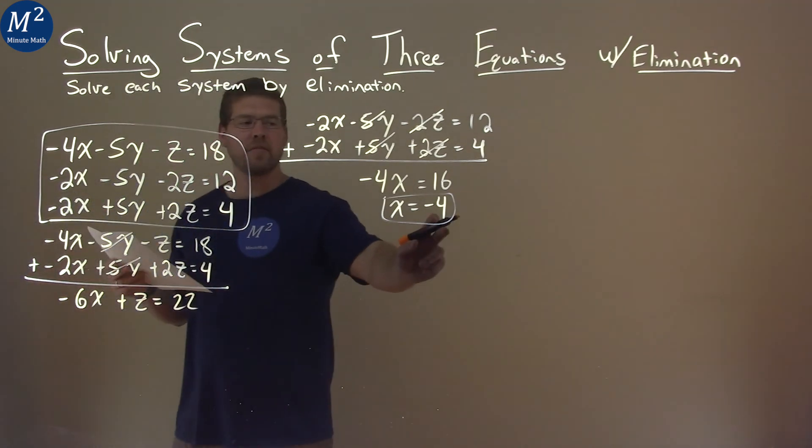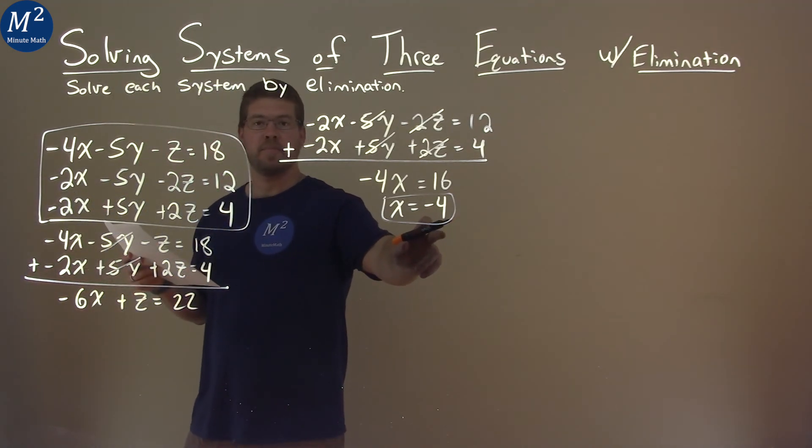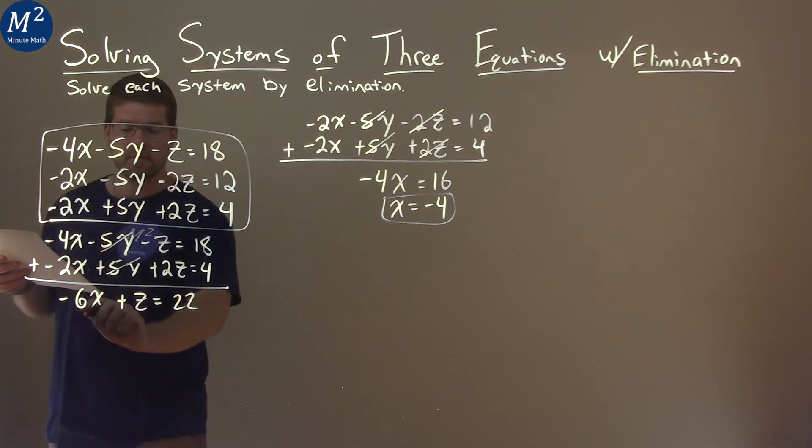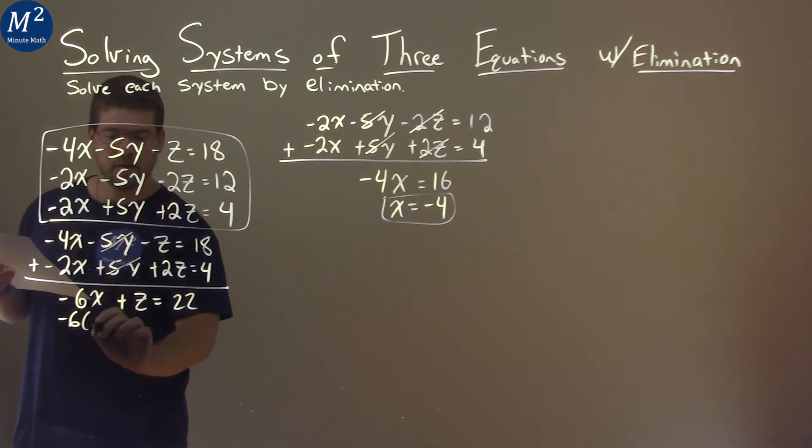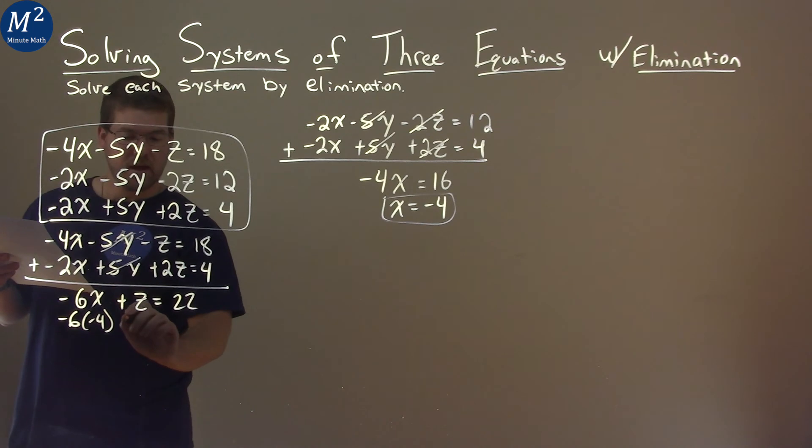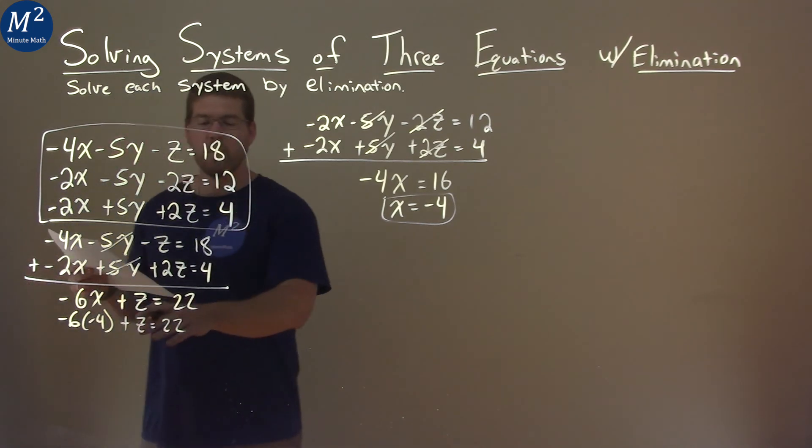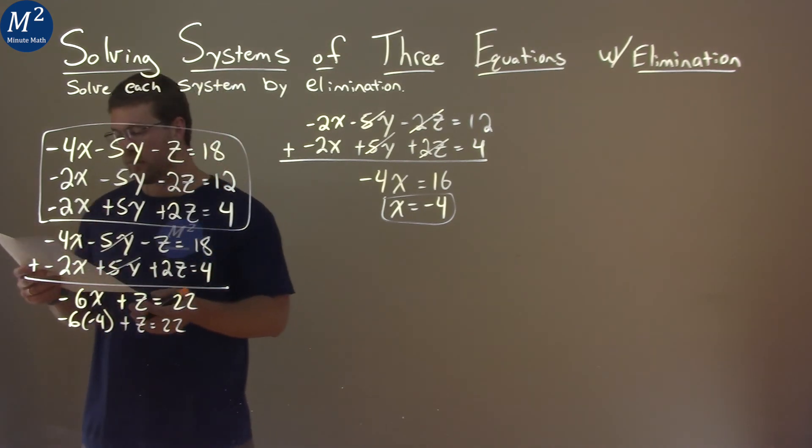But we found a value for x to be negative 4. If we put that in for this x right here, negative 4 here, then we have negative 6x plus z equals 22. And now we have an equation that's just one variable we can solve for that variable.